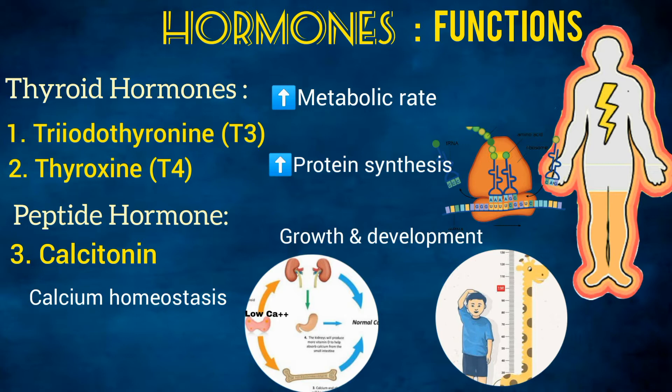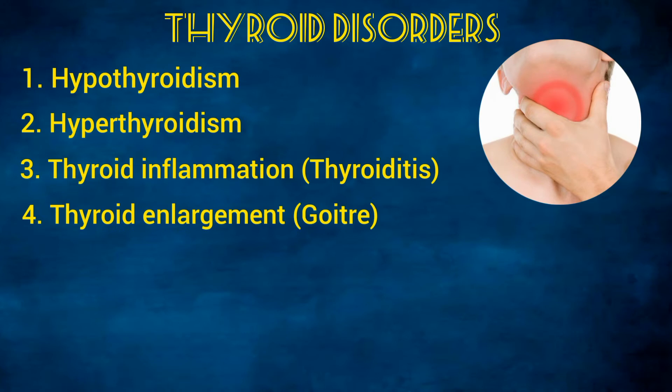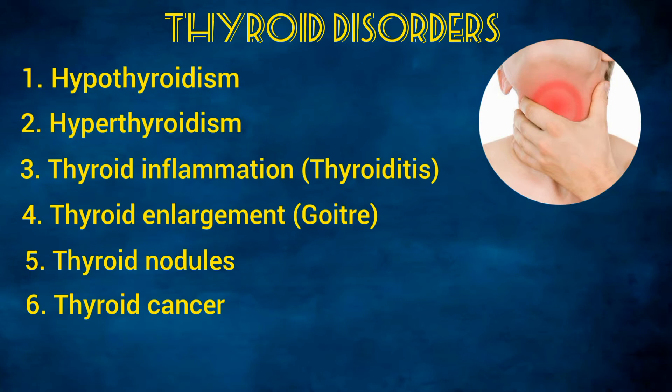Moving on to the second part of this video: thyroid disorders. These include hypothyroidism, hyperthyroidism, thyroid inflammation or thyroiditis, thyroid enlargement or goiter, thyroid nodules, and thyroid cancer.